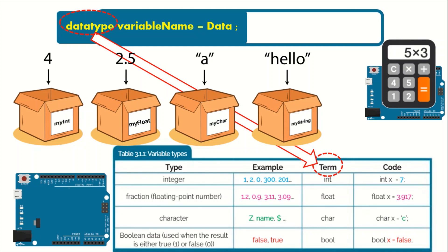Dealing with variables is one of the important tools in Arduino programming. So what is the use of variables? Variables in programming are used to carry information. You can think of variables like a box — this box can hold information for you. The content inside the box can change, but you cannot change the box itself.